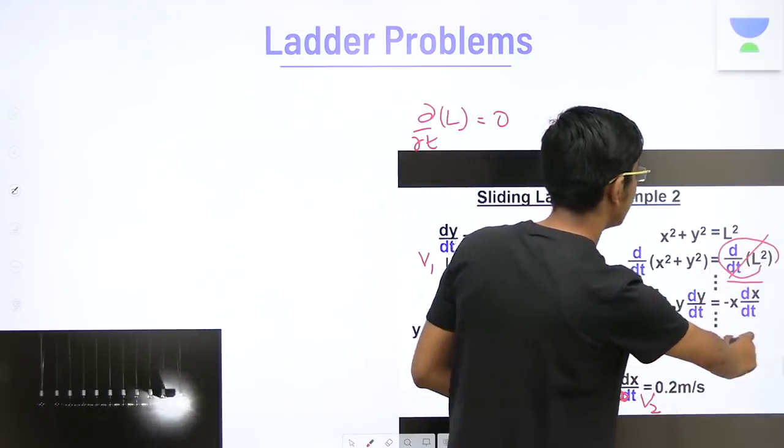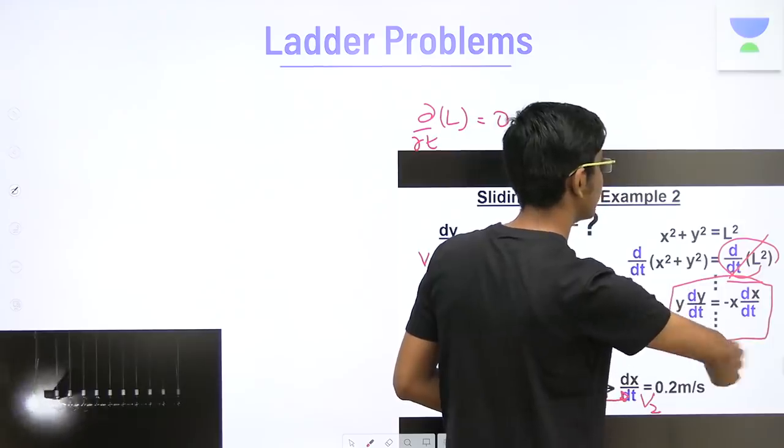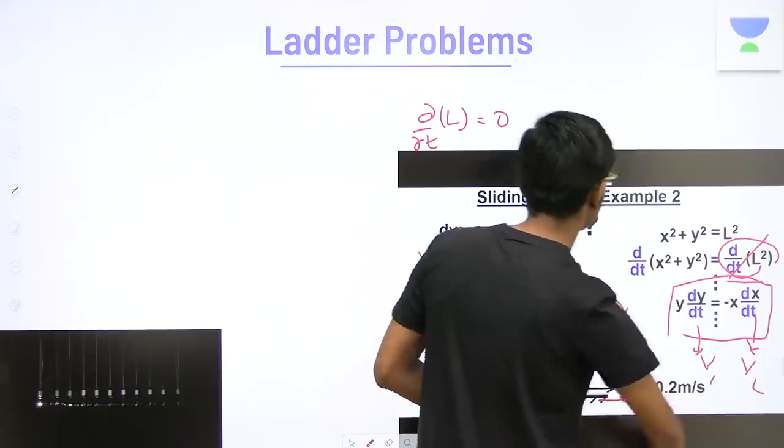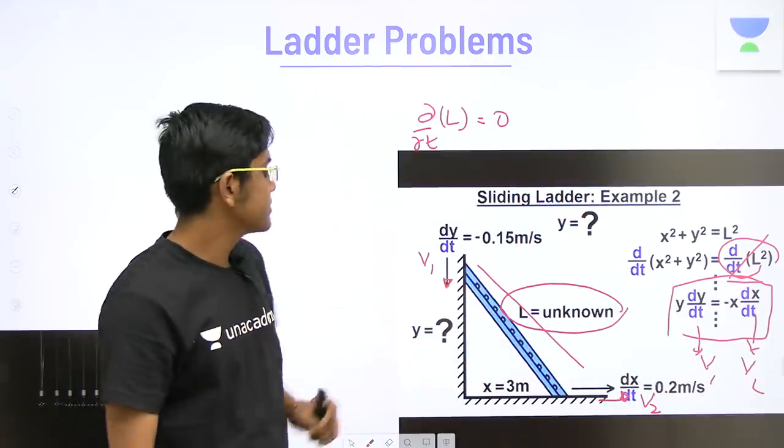So, we can easily write the Pythagoras equation, and by differentiating it, we get one side is equal to zero. So, we can easily equate the other two components on the two sides. This is v1, whereas this is v2. So, we easily get the equation by this method.